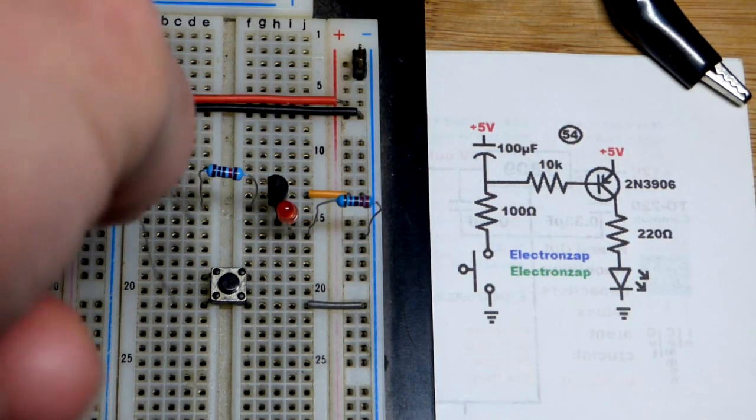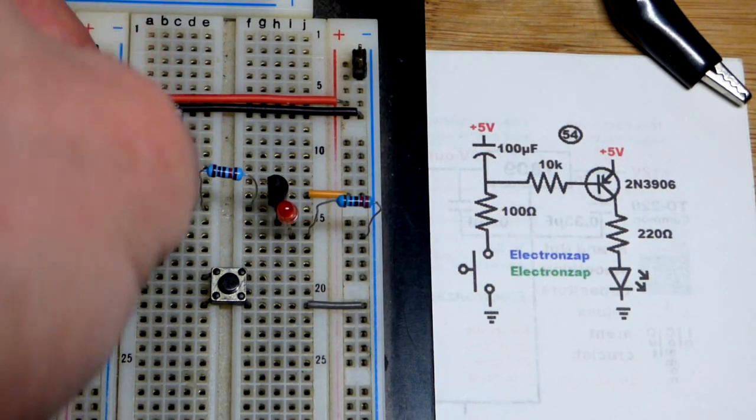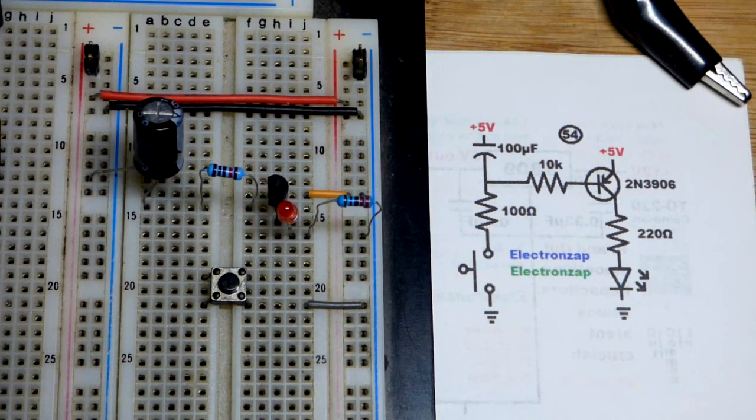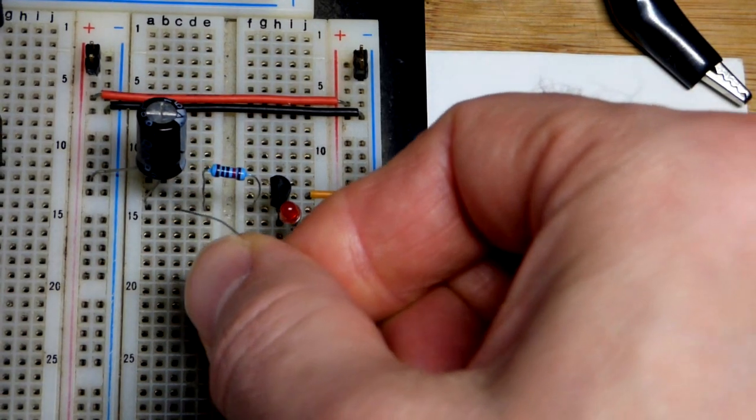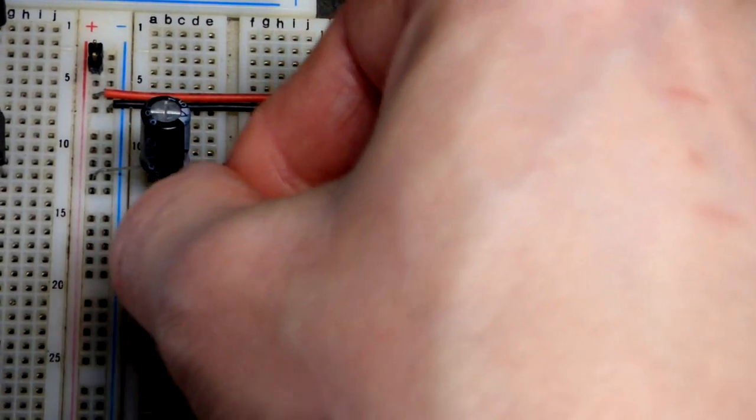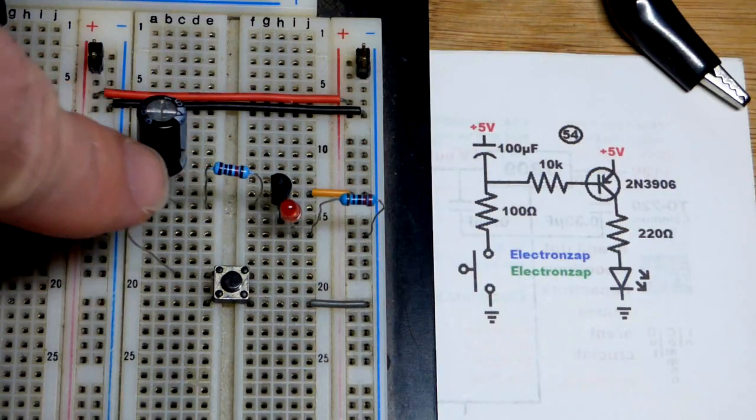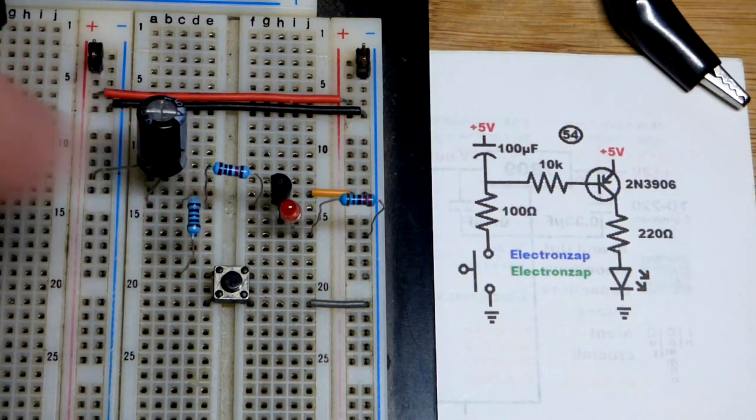And we're going to take the 100 ohm resistor, you know, somewhat low value, so that the capacitor charges almost instantly. Something was blocking my hand from being able to insert it. But there we go. So we can see that connection.